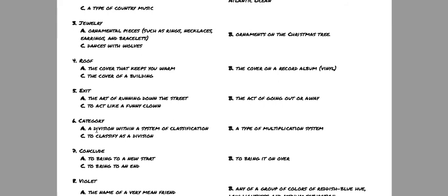Number six, the word is category. Is category A, a division within a system of classification? Is it B, a type of multiplication system? Or C, to classify as a division?